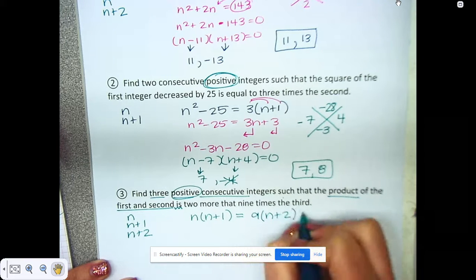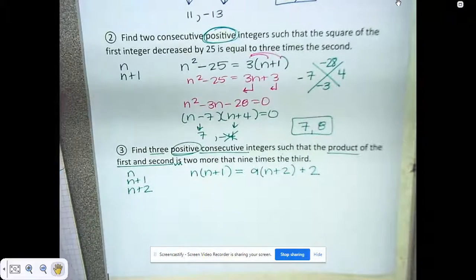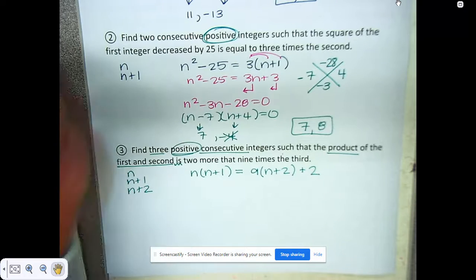So nine times the third would be nine times n plus 2, and two more than that adds to at the end. That is the hardest part y'all, is setting that up—going from those words into a mathematical sentence.